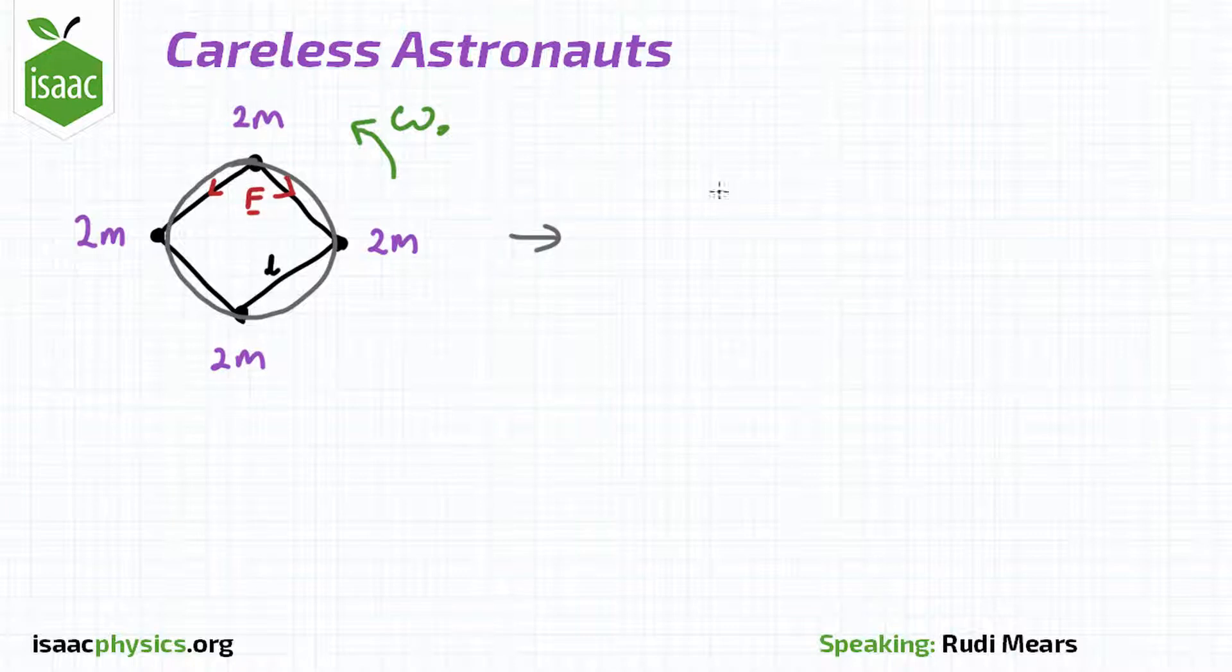Suddenly, two of the astronauts at opposing corners drop their tools, and they go from having mass 2m to having mass m.